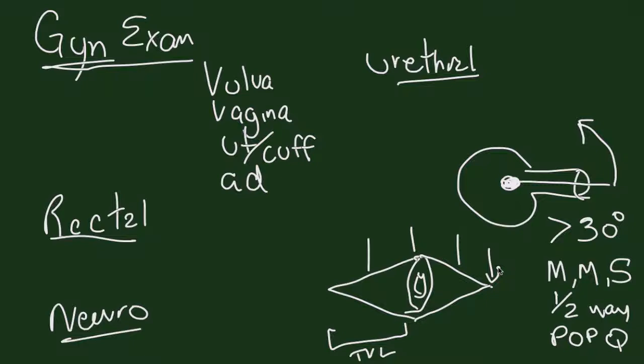With the POP-Q system, it is a more detailed system involving staging. This staging involves measurement of nine specific areas that will be described elsewhere in a PerlCast.